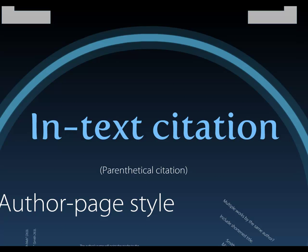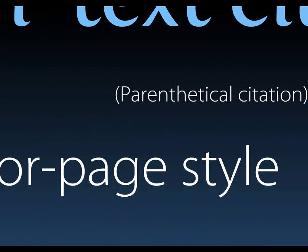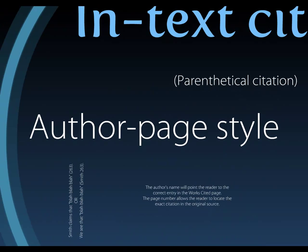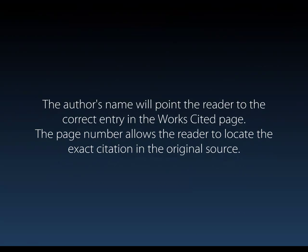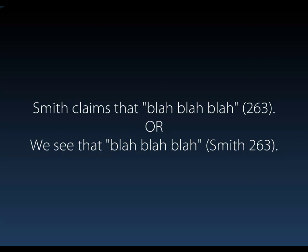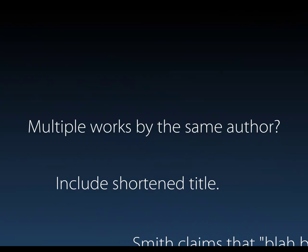In-text citation is an important part of MLA style citation, also called parenthetical citation. It's called author-page style in MLA because what you need is the author's name and the page number of what you are citing. The author's name allows your reader to locate the entry in the Works Cited list, and the page number allows them to find the exact quotation once they have the book. For example, if citing a work by an author named Smith from page 263, you either include the author's name in the body of your writing or in the parenthetical reference immediately after the citation. If you have multiple works by the same author, you need to include a shortened title to differentiate them.